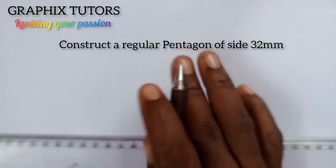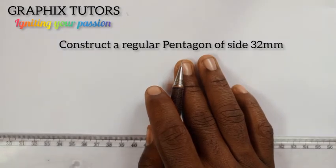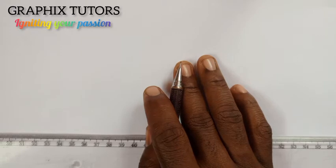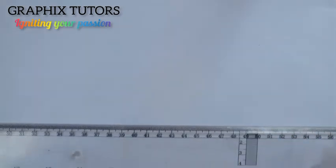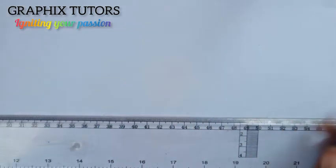Good everyone, my name is Graphics. Today we want to construct a regular pentagon with side 32 millimeters long. So the first thing you do when you see a question like this, you draw your horizontal line this way.